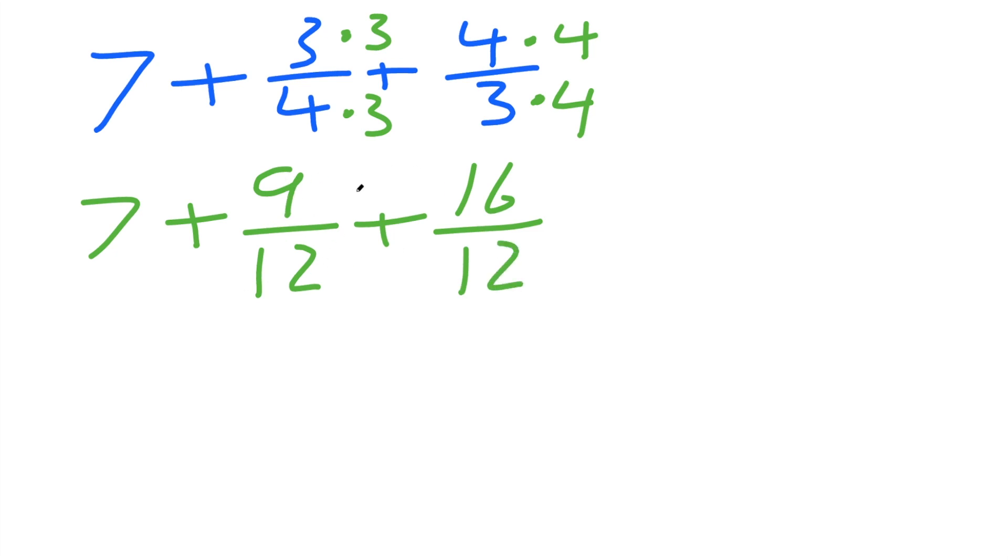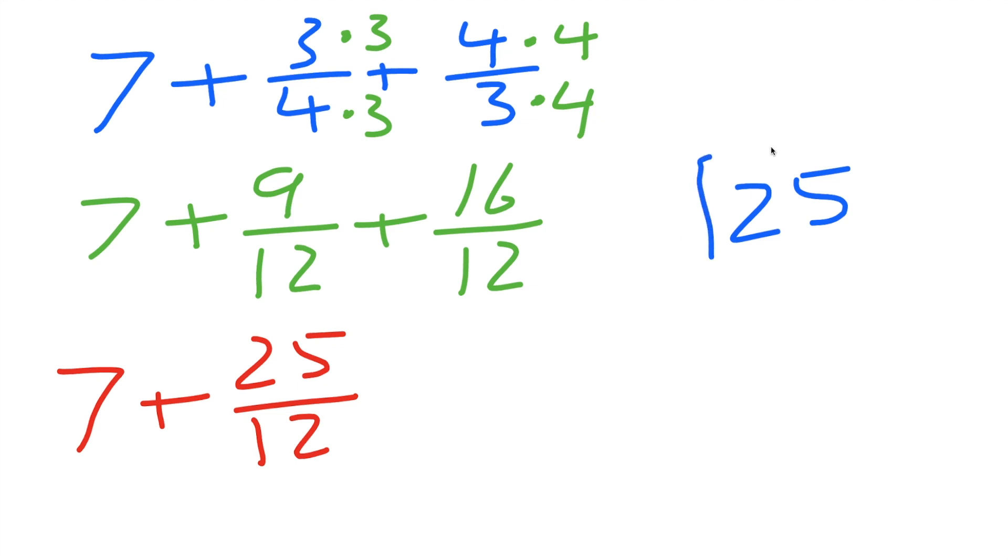So we can now add the numerator. So this 7, whole number stays, plus 9 plus 16 is 25, divided by 12. Now there's one more step, because 25 divided by 12 will give you one piece, a whole number, and then a fraction, because let's just do old-fashioned division. Let's say you have 25, and you're dividing it by 12.